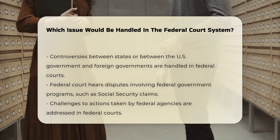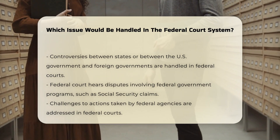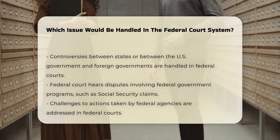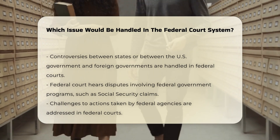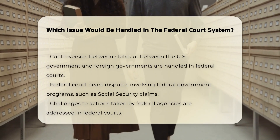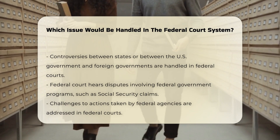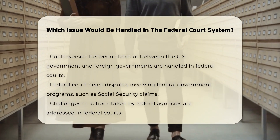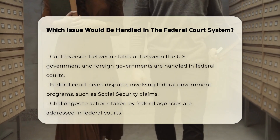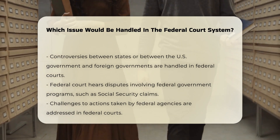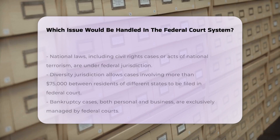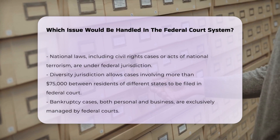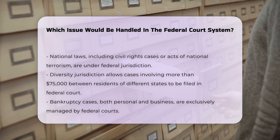Federal courts also handle cases that involve more than $75,000 in disputes between residents of different states, known as diversity jurisdiction. This allows a plaintiff from one state to file a lawsuit in federal court against a defendant from another state, provided the amount in controversy exceeds $75,000.